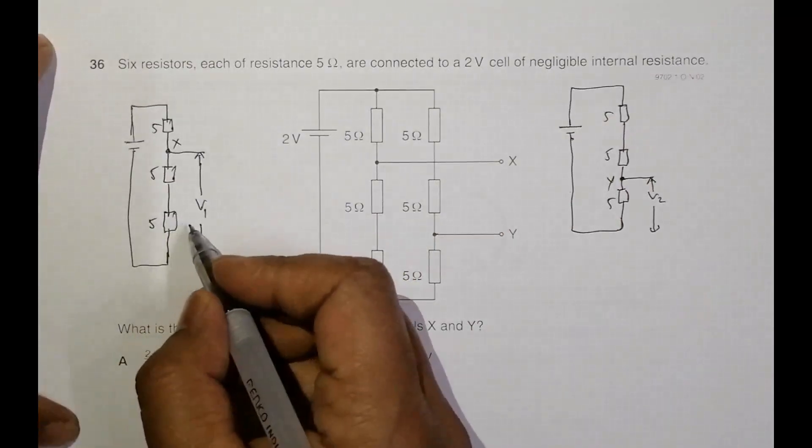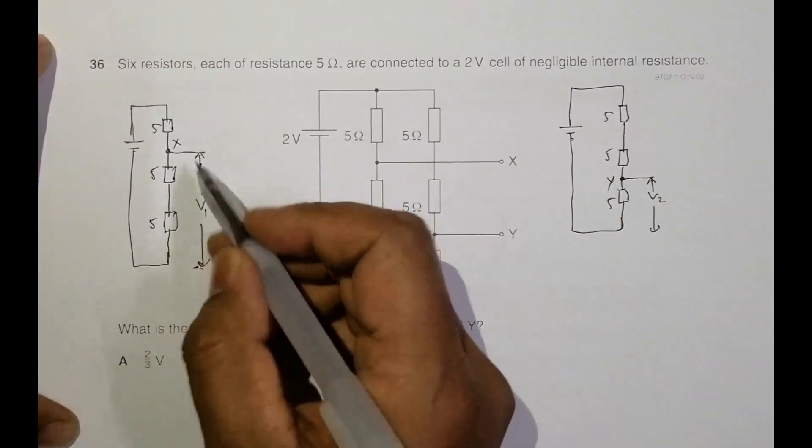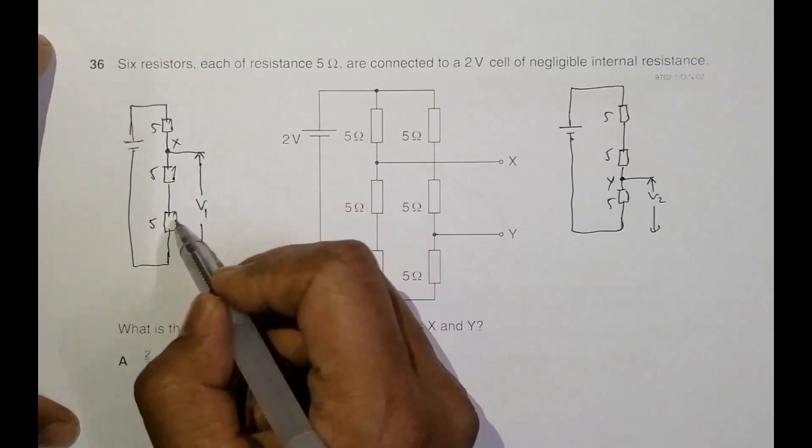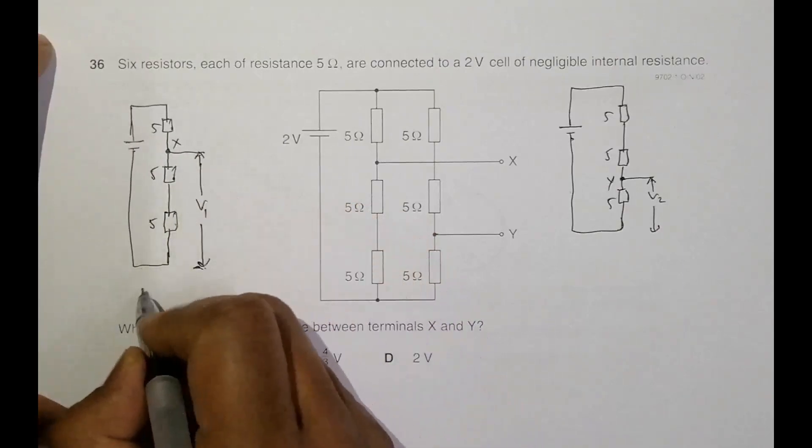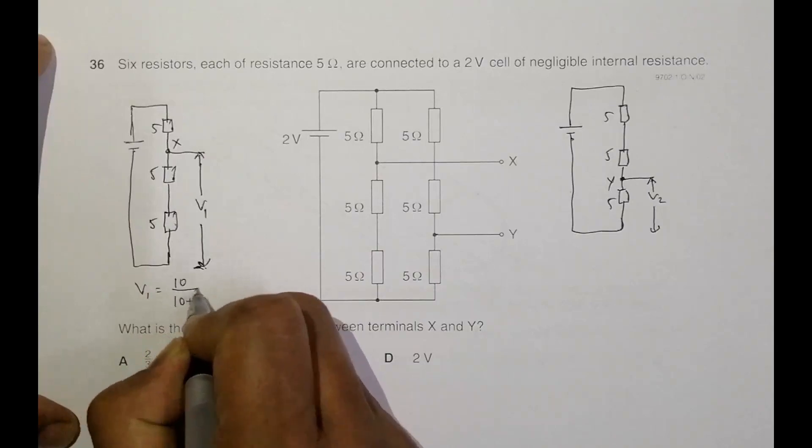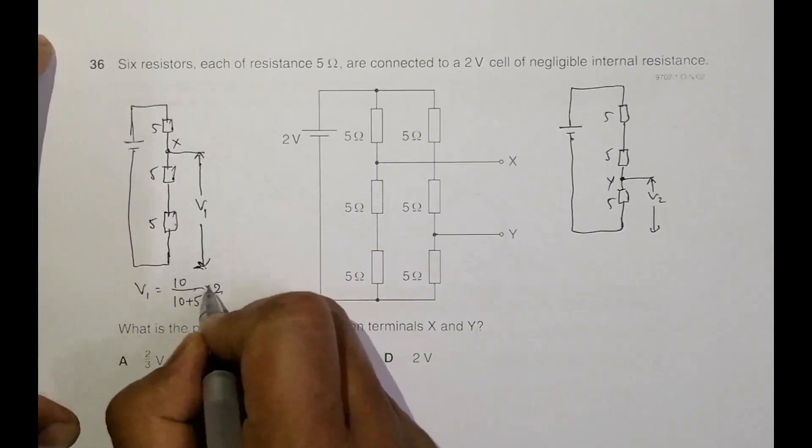So here, if I apply voltage divider formula here, the resistance from here to here is 10 ohm. It's because, this and this in series. So what we have is, this V1 will be equal to 10 by 10 plus 5 into this 2, into 2.